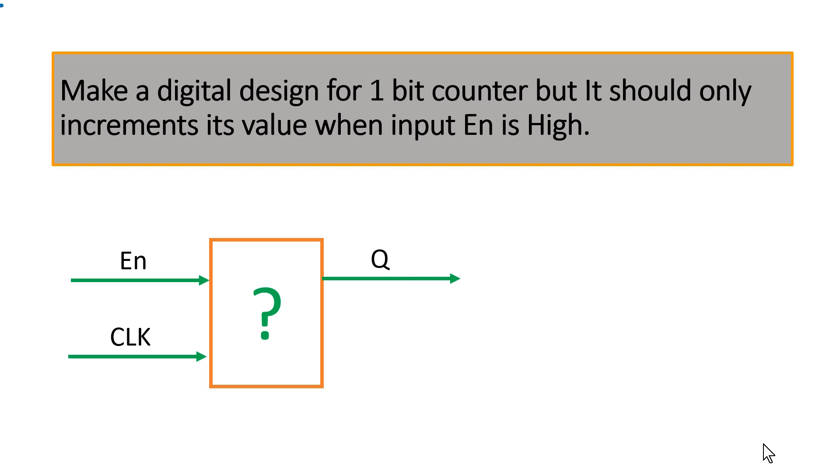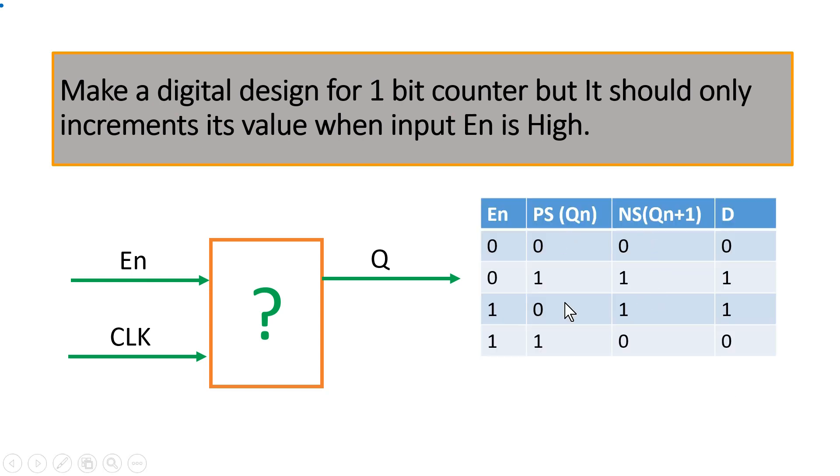Friends I am going to tell you a general method. Using that method you will be able to resolve any such type of problem. In this method you have to simply draw a state table. Very simple state table. Here you have to write all the inputs. Here we have only one input enable so we will write enable. And because we are going to design one bit counter so we have only one flip-flop. So I am writing present state that is Qn. So all the outputs are flip-flop. So here I have only one flip-flop so I will write Qn.